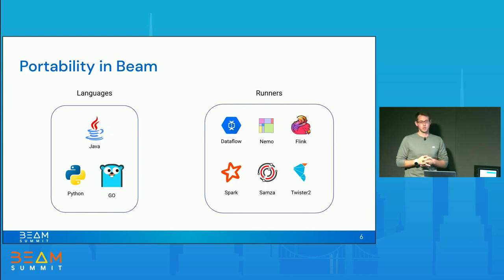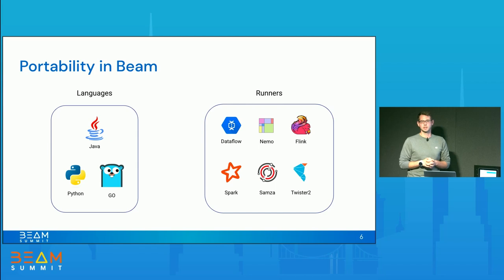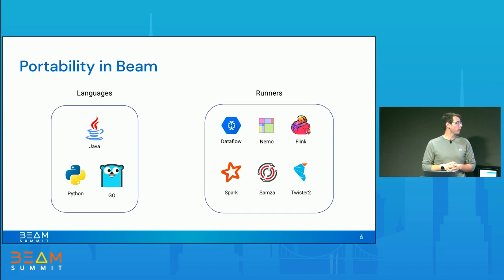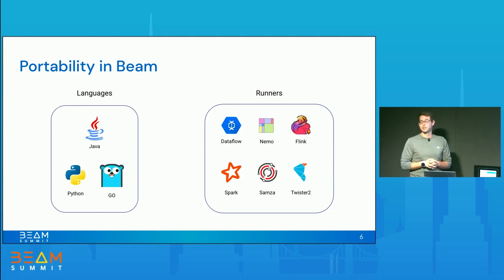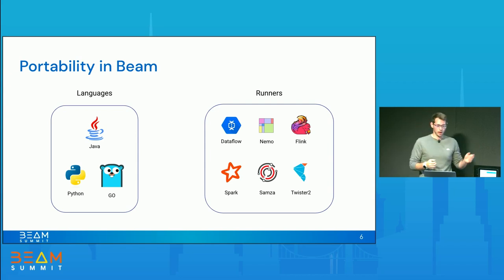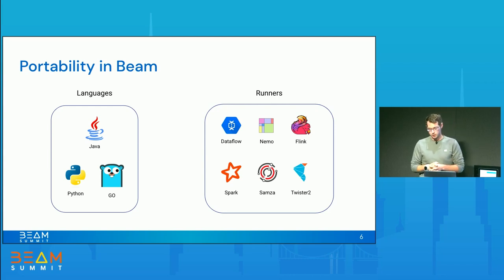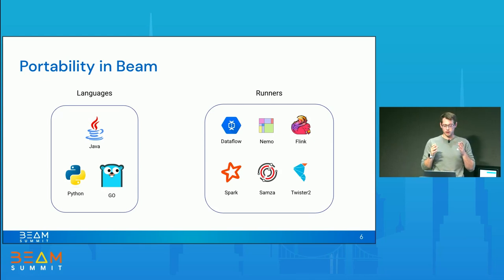If we now switch to the view from Beam, whenever we talk about portability in Beam, there are basically two aspects. On one hand, there is the Portability API, which provides a language-neutral representation of your Beam pipeline — giving you the capability of writing a Python Beam pipeline, for instance, and running it on the Flink runner. On the other hand, there is the Runner API, which is a set of interfaces runners have to implement to be able to run a Beam pipeline. Currently in Beam, Java, Python, and Go are supported. In terms of runners, there is Dataflow as a managed service, and then Spark, Flink, Nemo, Samsara, and Twister 2. So you basically have the opportunity to write your pipeline once and run it everywhere.